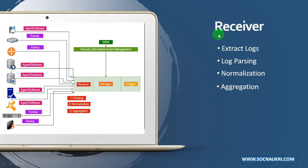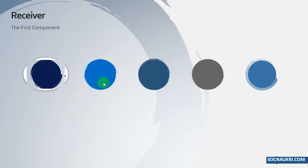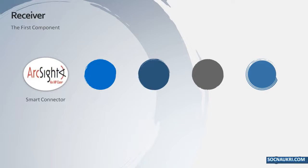The receiver is the first component, responsible for direct interaction with data sources and collecting logs from all devices across the network. Collected data is further parsed and normalized before it passes to the second component called manager. When the raw data is parsed by the receiver, it is normalized to present it in a structured and usable format by the manager. Different SIM vendors have their own naming convention for each component.